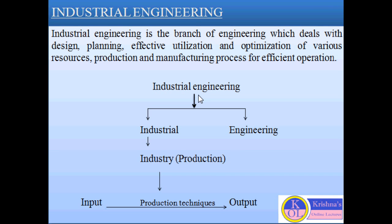Industrial engineering is basically the combination of two words: industrial and engineering. The word industrial is related to industry, and industry is basically related to production. Production means to convert the input resources into output products or services with the help of production techniques, production processes, and the processing equipment.